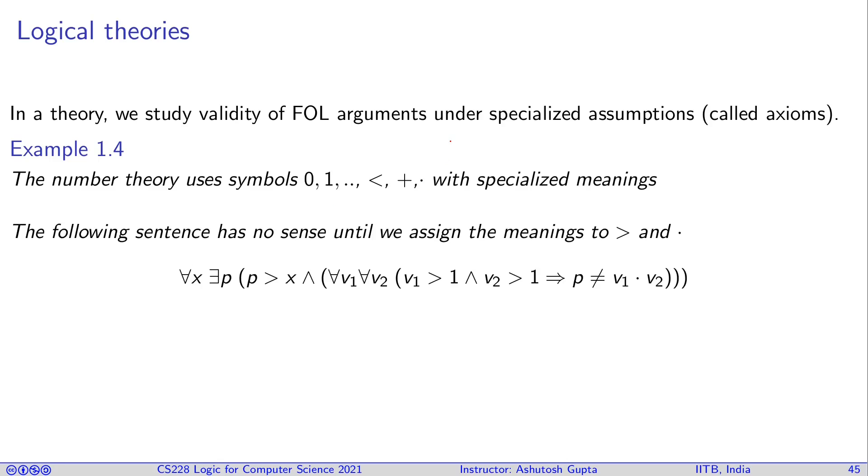So here is an example. So let's suppose you write this formula. For all x you pick a number, there exists a p which is greater than x, such that for all v1 and v2, both are greater than 1, if you multiply them, then they are not equal to p. That means p is a prime number. So for every number there is a bigger prime number. This is the interpretation you get when you look at this formula. But when first-order logic looks at it, it doesn't know what this means, it doesn't know what multiplication means. So you need to provide the meaning of those symbols, and those are called axioms. Until you add those axioms, it won't understand this formula.